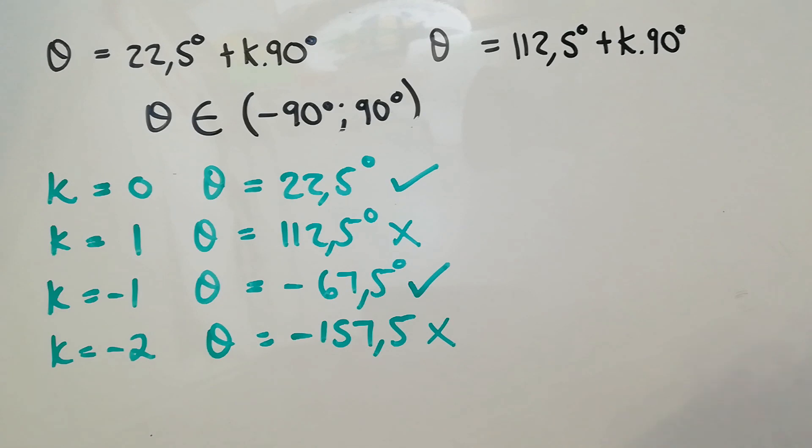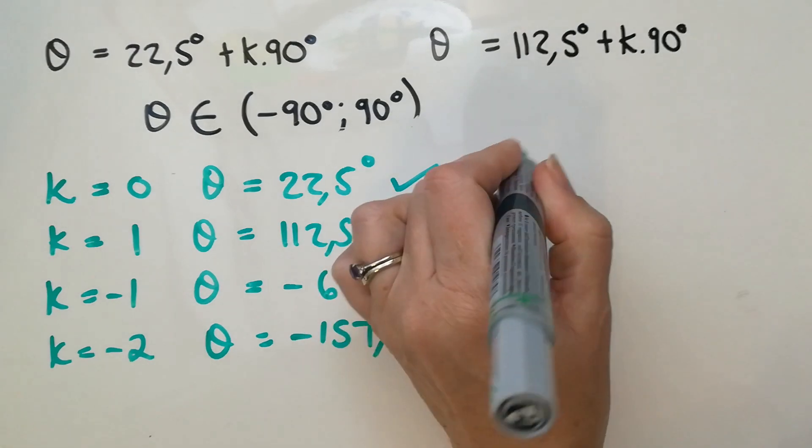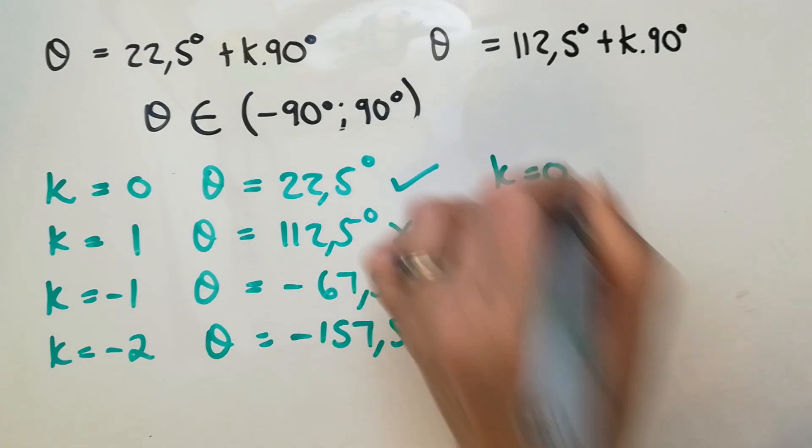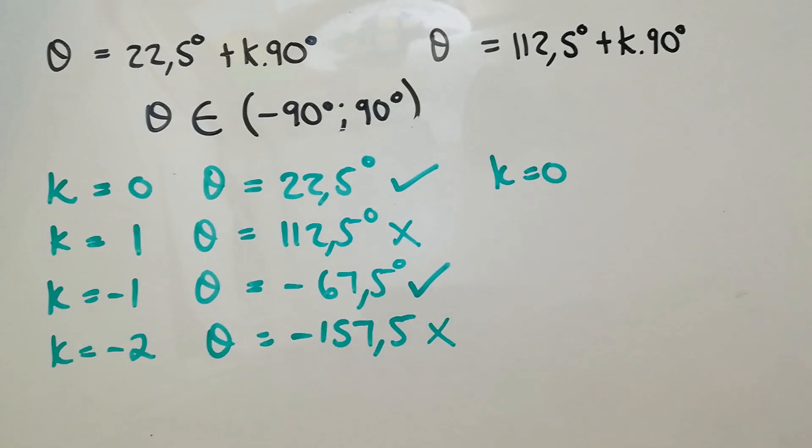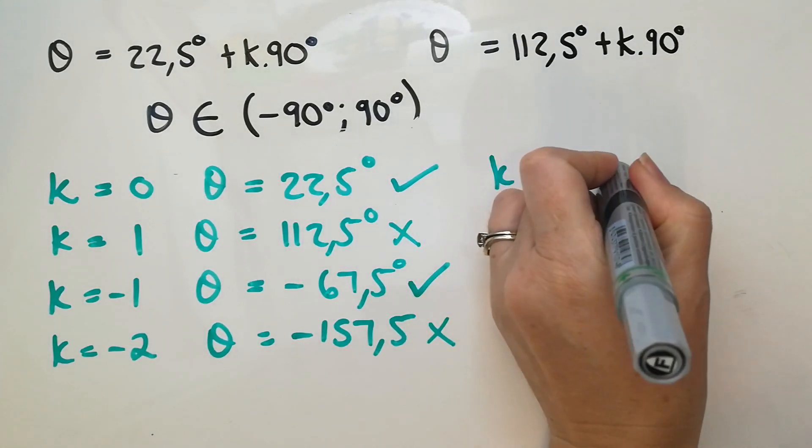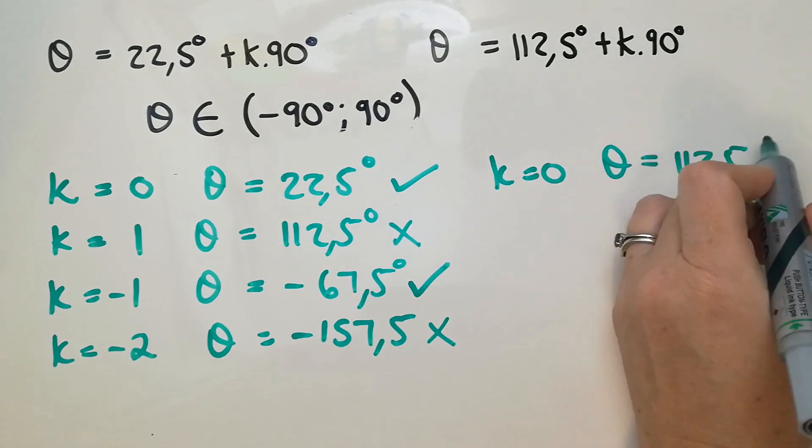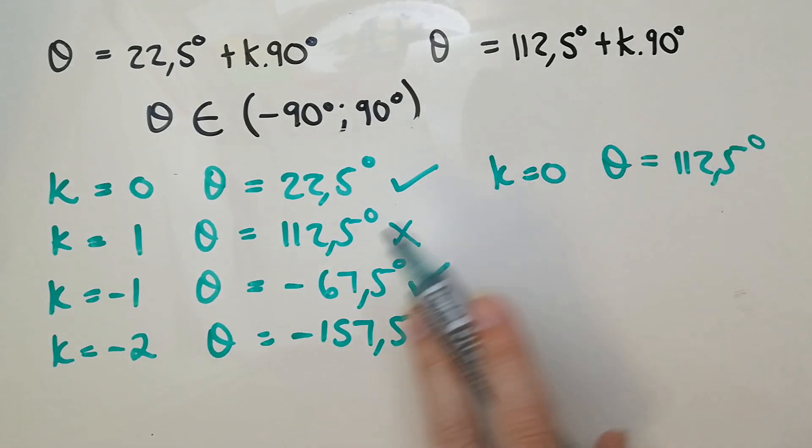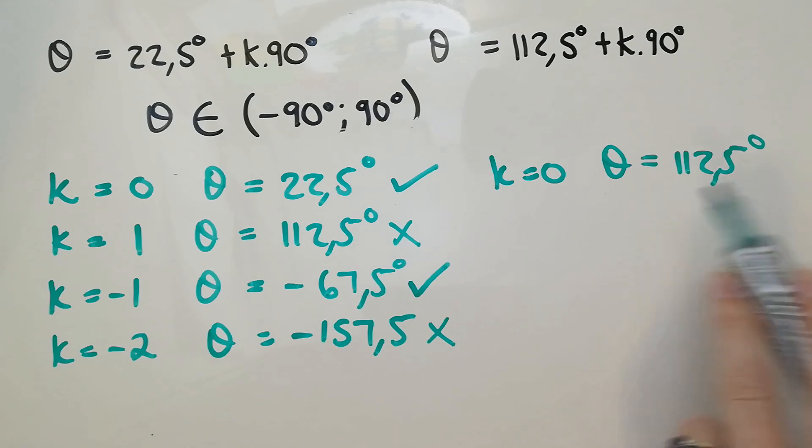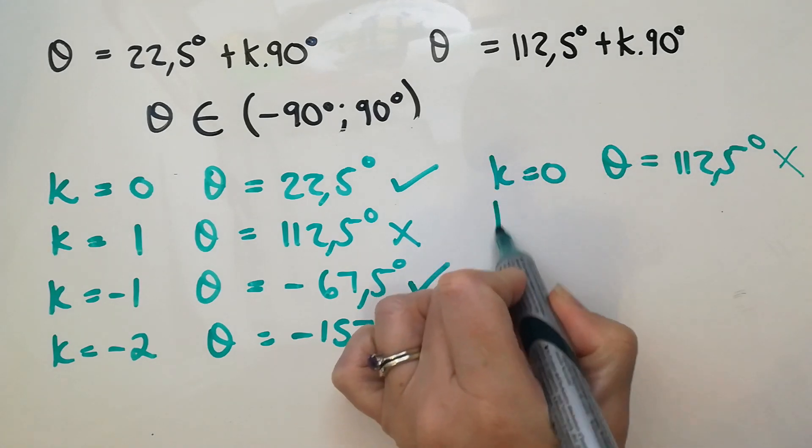Now, look what happens in quad three. So let's go again. We've got k is zero. If k is zero, then θ will just be the 112.5. Look, we've already got it. So you're going to see a whole lot of redundant steps being taken here. Only when it's a tan, though.